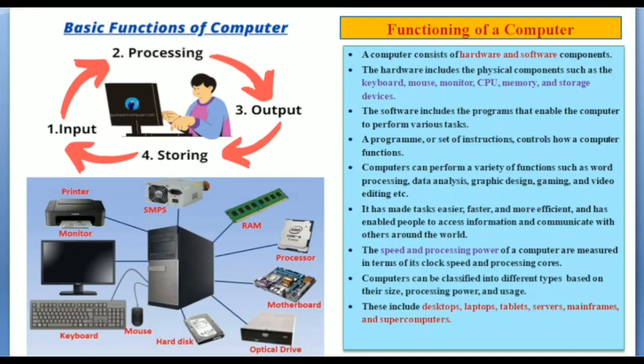A computer consists of hardware and software components. The hardware includes physical components such as keyboard, mouse, monitor, and CPU. These four are essential components of a computer system to run a computer, and inside CPU the storage devices are placed.